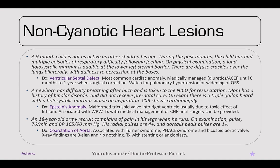An 18-year-old army recruit complains of pain in his legs when he runs. On exam, pulse is 76, BP is 165/90. Radial pulses are 4+ and dorsalis pedis pulse is 1+. This is coarctation of the aorta. It's associated with Turner syndrome and bicuspid aortic valves. X-ray findings include the three sign and rib notching. Treatment is stenting or angioplasty.